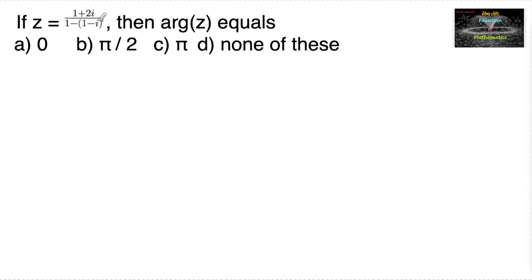If z is equal to 1 plus 2i upon 1 minus of 1 minus i whole square, then argument of z is... Given z is equal to 1 plus 2i upon 1 minus of 1 minus i whole square.